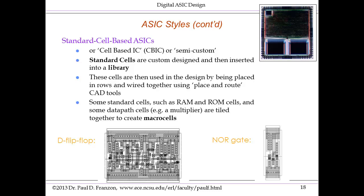In addition, there are other functions that don't suit themselves to place and route. Some arithmetic functions such as big multipliers and memories come as arrays, and these are sometimes tiled together from what are called macro cells. An example of a standard cell ASIC is shown on the top right — in the top two-thirds you can make out the rows of standard cells as they're wired together, and in the bottom you have some macro cell-generated tiled arrays, most probably SRAMs.